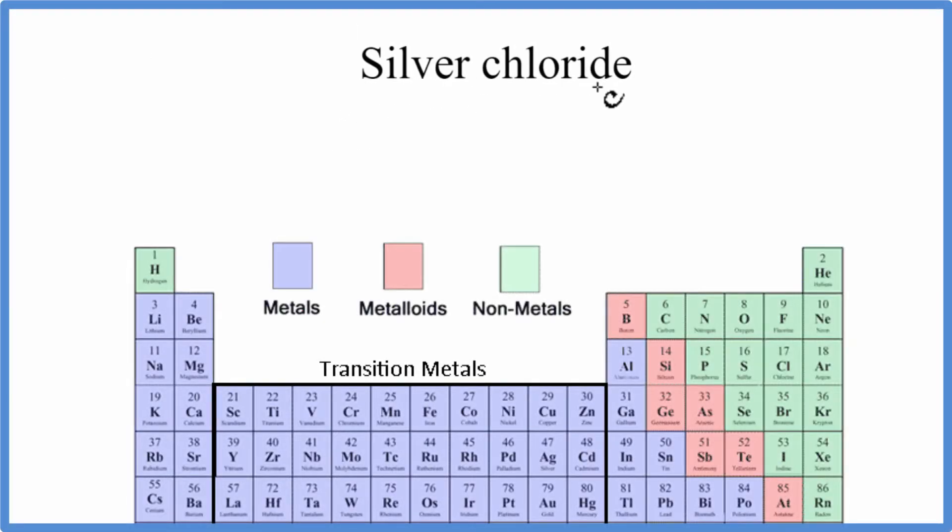To write the formula for silver chloride, we'll go to the periodic table. Silver, that's Ag, and then chloride, we're looking for chlorine, that's Cl.